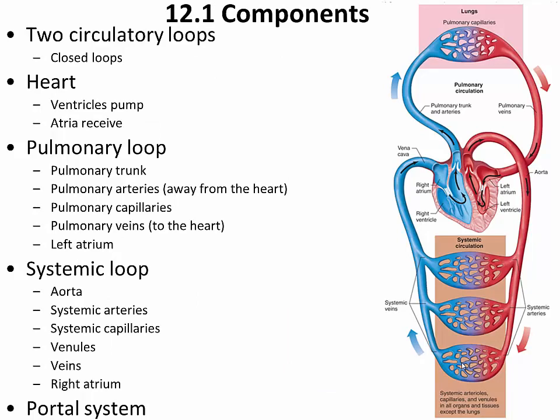Looking at the vessels and the heart, as mammals we have a fully separated, very efficient circulatory system that consists of two separate loops. We have a pump — the heart — that is key to pushing blood through this system. The heart is divided into two chambers on top, referred to as atria, and two chambers on the bottom, referred to as ventricles.